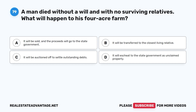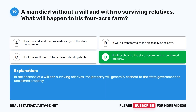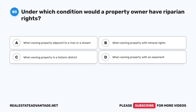Question 79: A man died without a will and with no surviving relatives. What will happen to his four-acre farm? A. It will be sold and the proceeds will go to the state government. B. It will be transferred to the closest living relative. C. It will be auctioned off to settle outstanding debts. D. It will escheat to the state government as unclaimed property. The correct answer is D. In the absence of a will and surviving relatives, the property will generally escheat to the state government as unclaimed property.